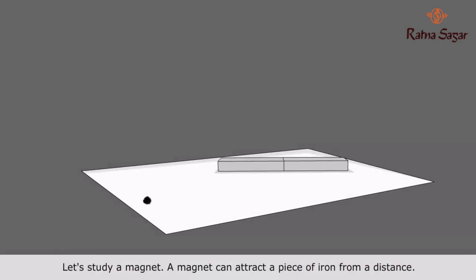Let's study a magnet. A magnet can attract a piece of iron from a distance. Therefore, a magnetic force is a non-contact force.